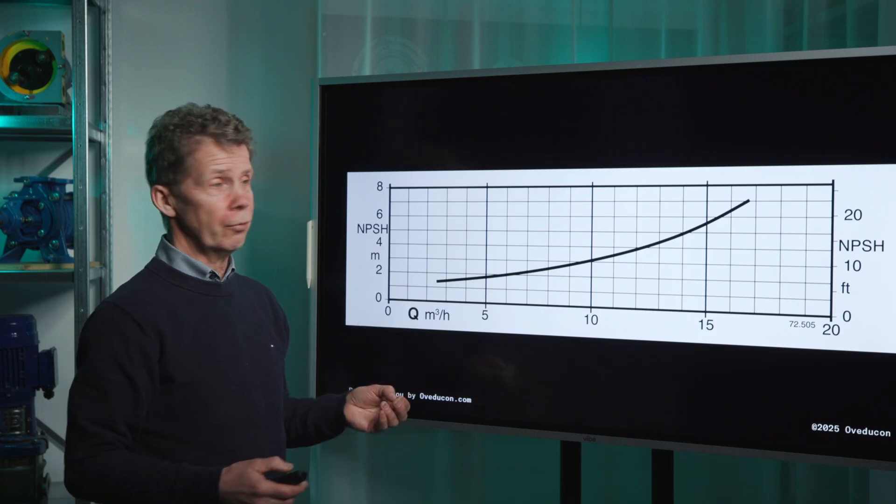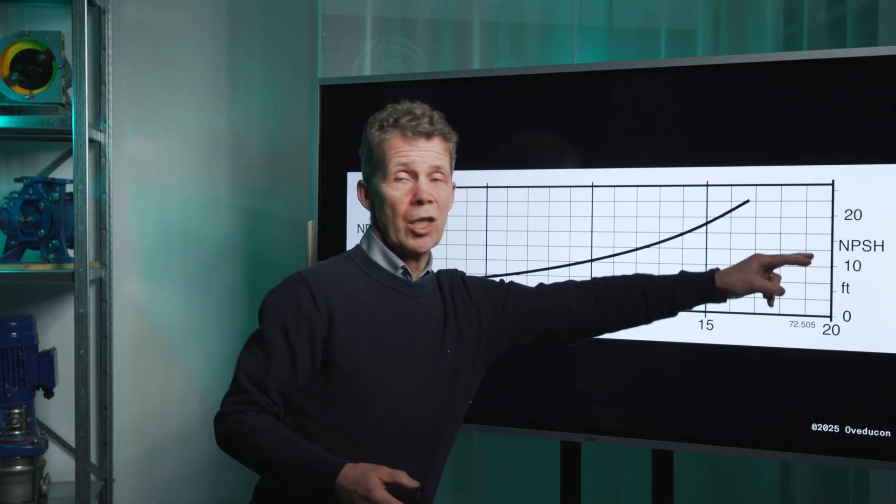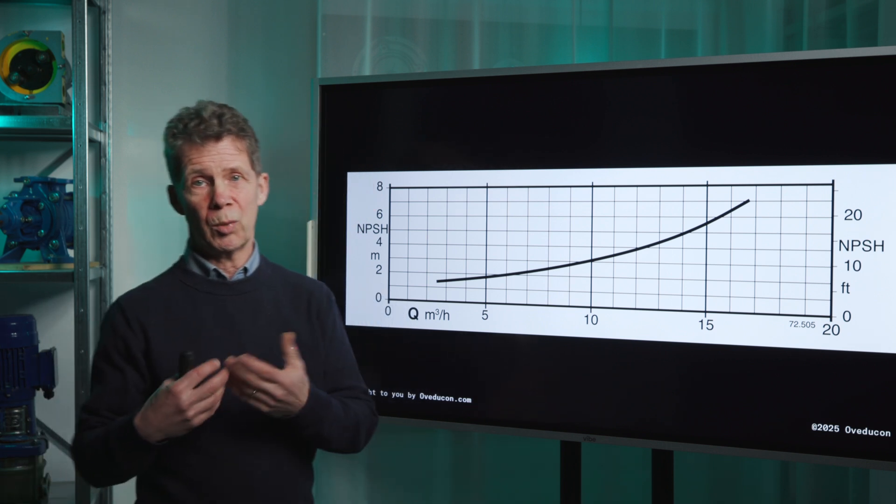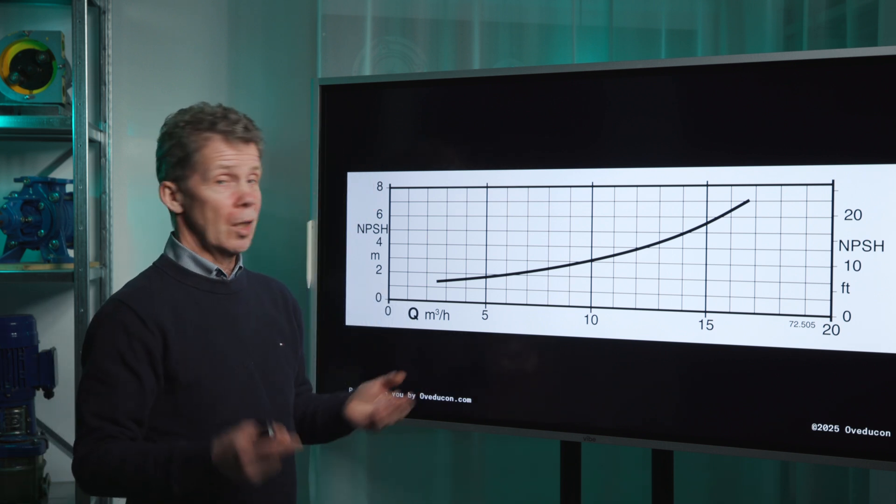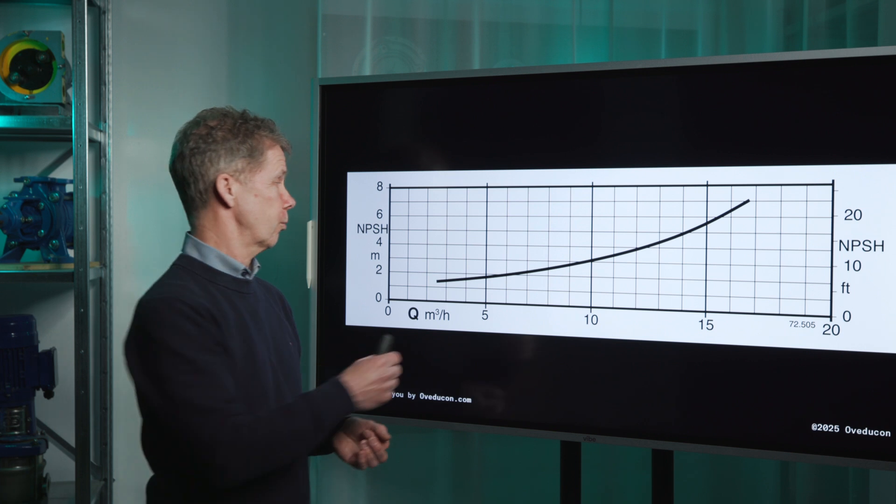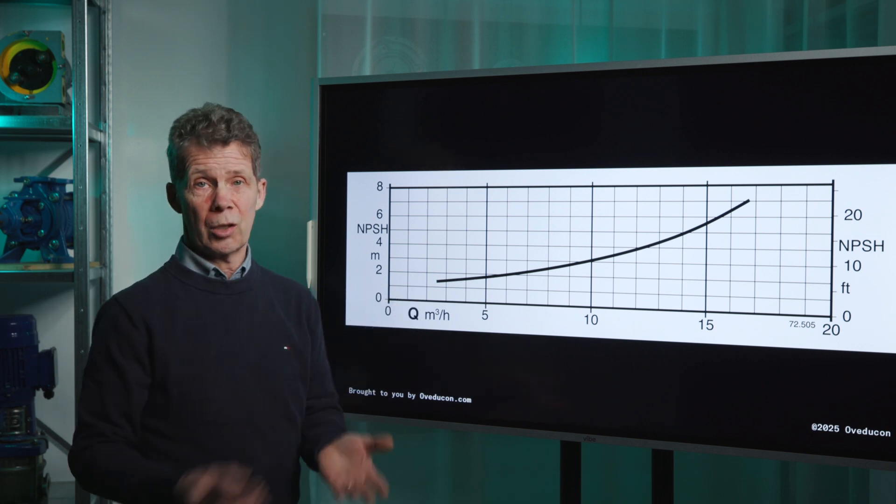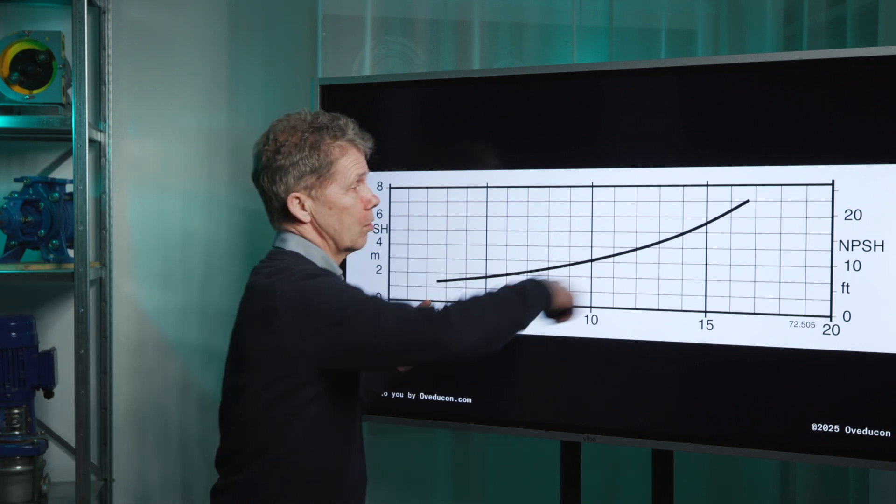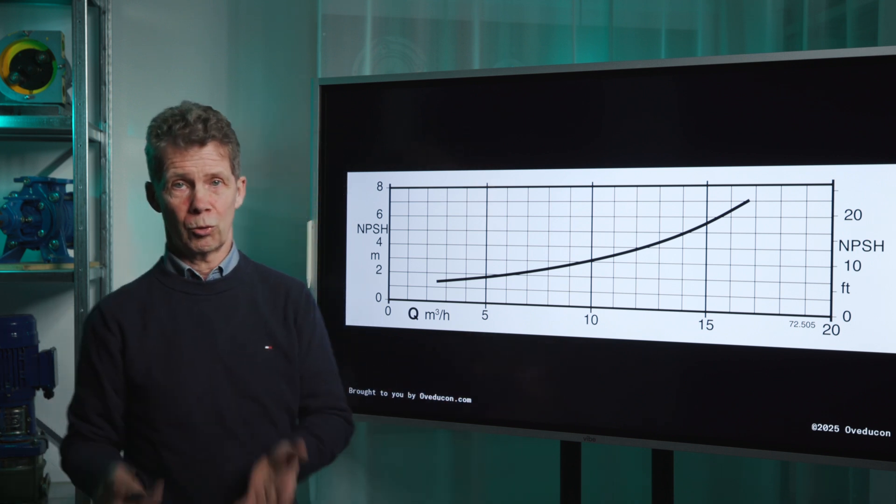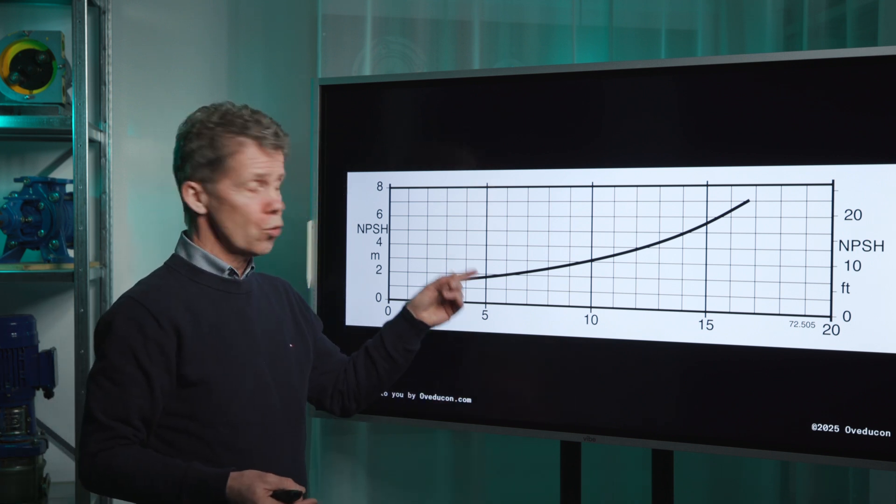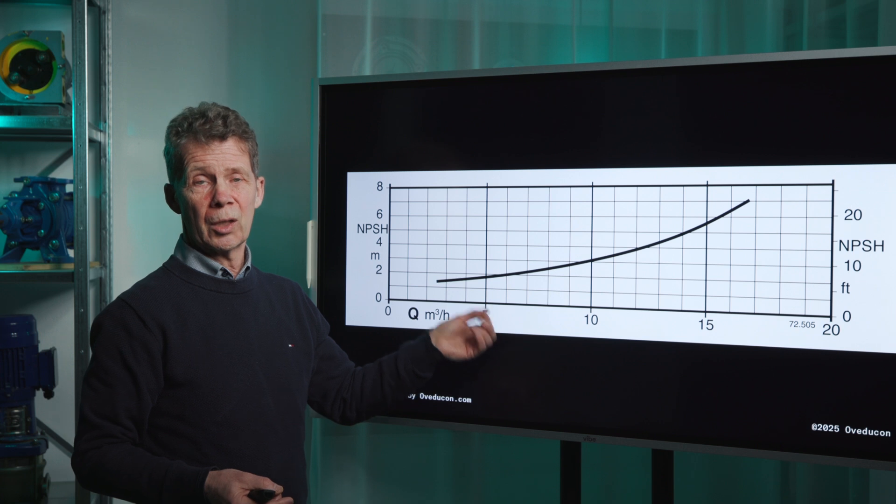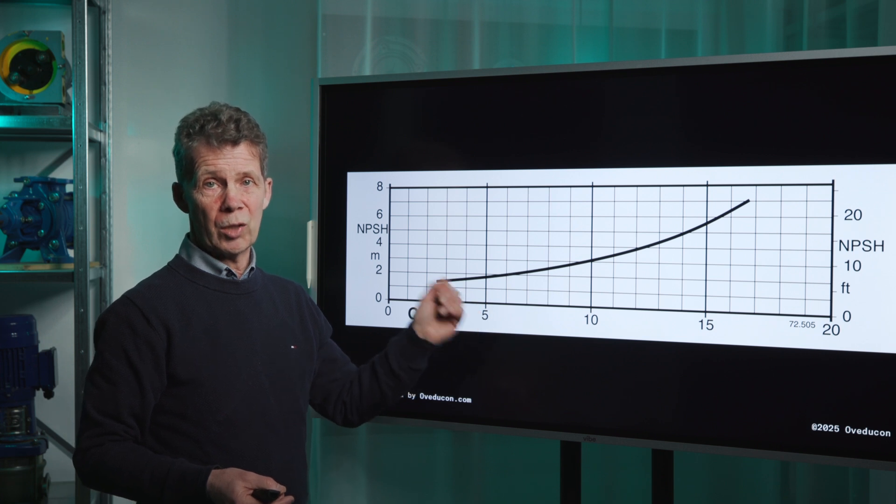Here we have a curve that says NPSH but there is no NPSH required. But still, this curve isn't starting at zero capacity and it has the shape I told you about. Also, in this case we are talking about an NPSH required curve.